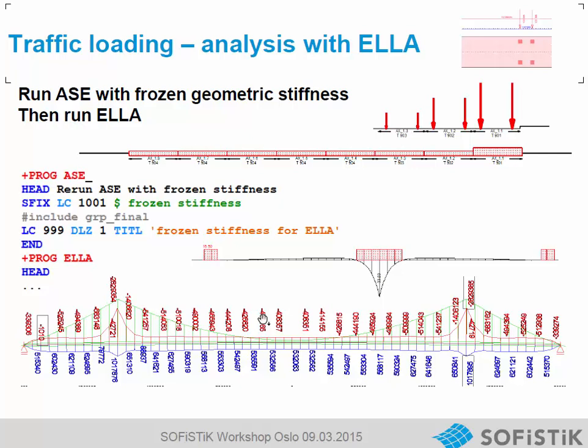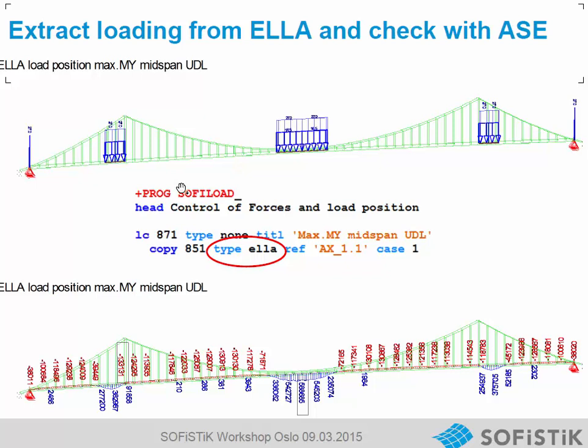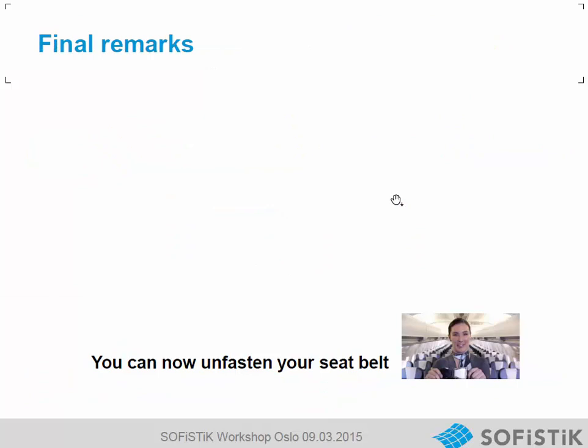A short note on influence line evaluation with LR. With our stressed system we can calculate traffic loads using a frozen stiffness. We make an ASE run just before LR where we set a fixed frozen stiffness — ASE makes the stiffness matrix including geometric effects of the cables — and LR uses this frozen stiffness. We can also use SOFI load with LR load positioning; for example, for the maximum bending moment in midspan, this gives the most critical load position.